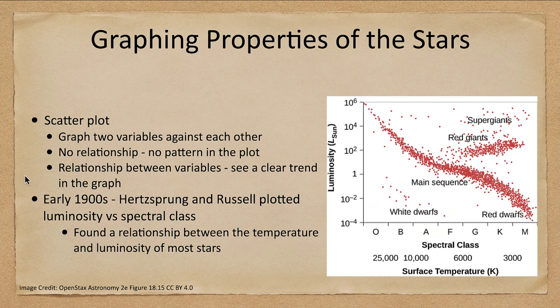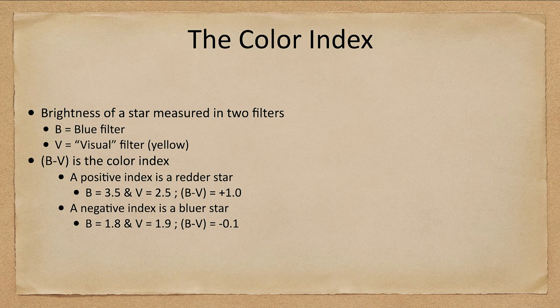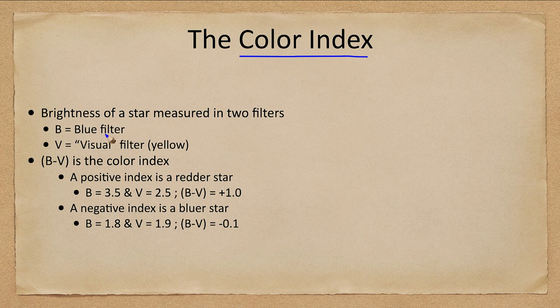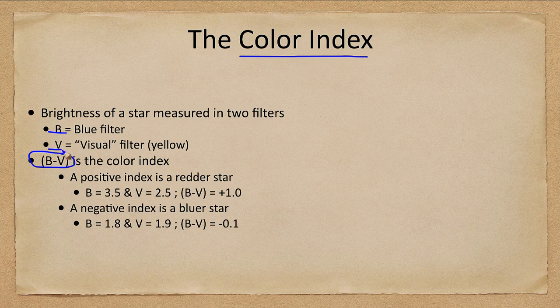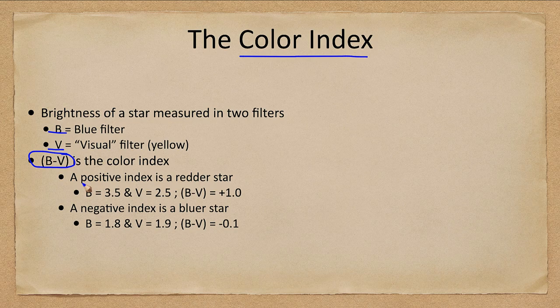Now, when we look at plotting this, one of the things we have to understand is what we call the color index. We looked at this previously as a way of being able to measure the temperatures. One color index that we use is called B minus V. And that uses the blue filter looking at blue light and the visual filter looking at yellow light. If you measure these two magnitudes and then subtract them, if you get a positive value, that means a redder star.